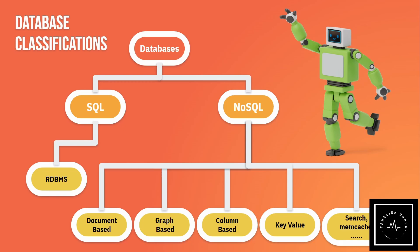If we go to the NoSQL database side, we classify several concepts based on the database: document-based, graph-based, column-based, key-value based, and search-based. There are different use cases and different databases for each.